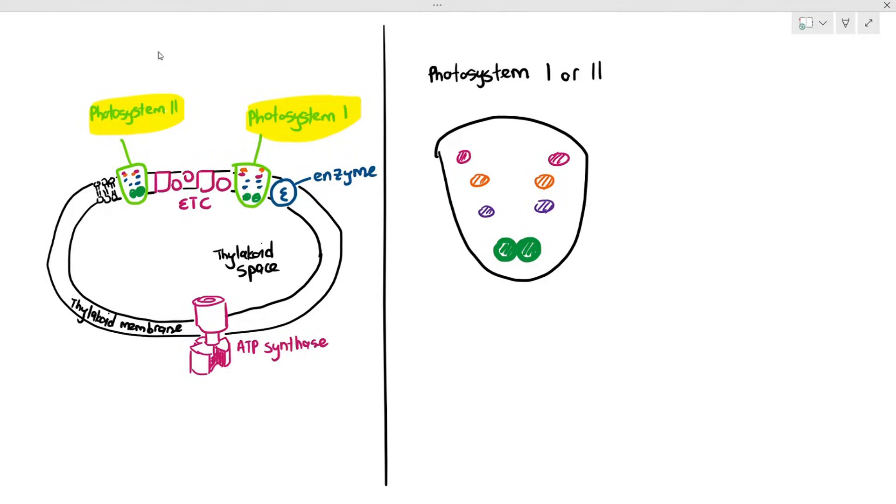Each of those circles are referred to as something called photosynthetic pigments. In the first video about photosynthesis, I told you that the function of these pigments were to absorb light so that the light energy can be harnessed to synthesize ATP.